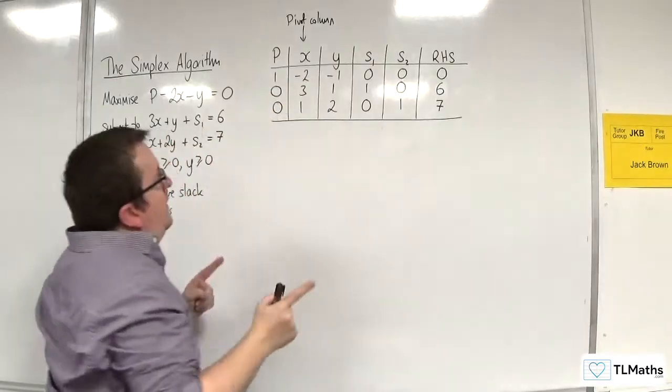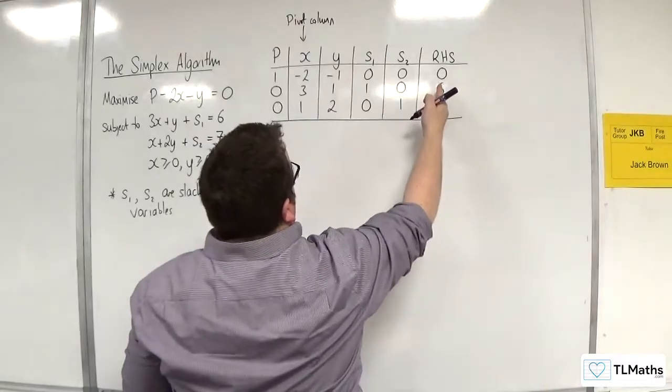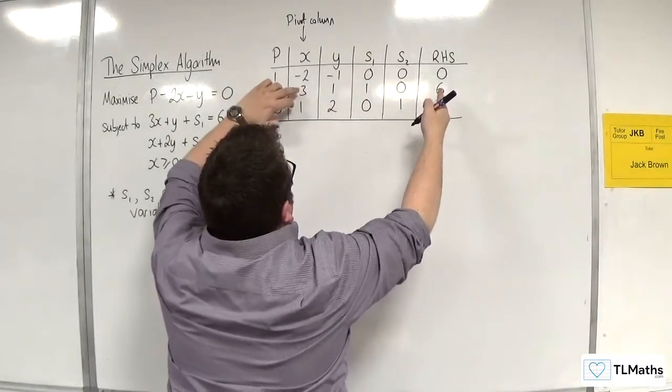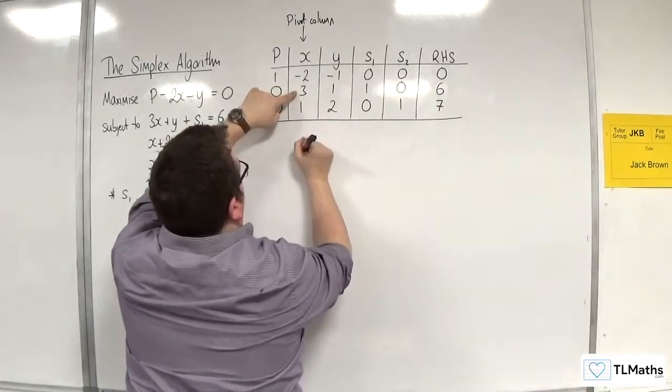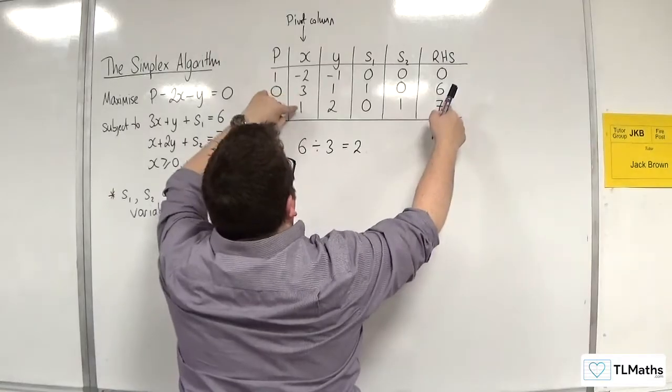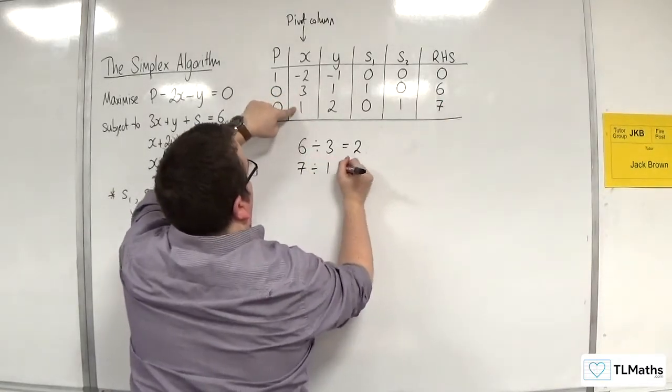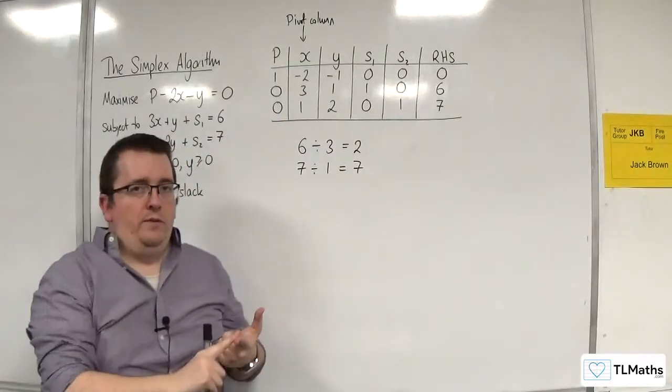So you look down the pivot column, and what you then do is you divide your right-hand side by each of the values in your pivot column. So we're going to do six divided by three, which is two, and seven divided by one, which is seven. Now, when you do that,